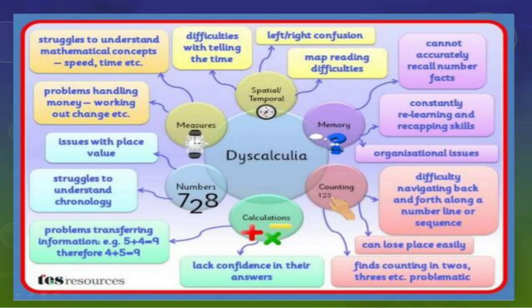Dyscalculia means difficulty in coordinating with numbers — basic plus, minus, addition and all these operations. Students struggle to transfer information and to understand the basic ideology behind solving problems. To overcome all these difficulties, it is best to identify learning disabilities at an early age so that their impact can be reduced, though we cannot cure them fully — it remains a lifelong condition.